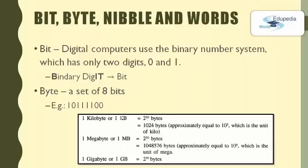There are four important key terms useful when discussing data representation: bit, byte, nibble, and word. A binary digit is called a bit — digital computers use the binary number system which has two digits, 0 and 1. A byte is a set of 8 bits; for example, 10111100 has 8 bits. In computers, thousands of bits are used, so storage is usually represented in kilobytes, megabytes, or gigabytes. 1 kilobyte (1 KB) equals 2^10 bytes, which is 1024 bytes, approximately 10^3.